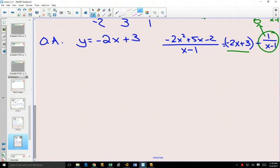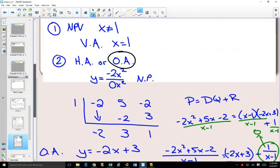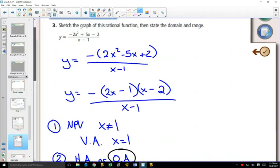So now, step 3, all of our intercepts. Y-intercept is easy, you plug in 0 for x, so if we go and scroll up to our original equation, can you see that if you plug in 0 for x, you're going to get negative 2 over negative 1?